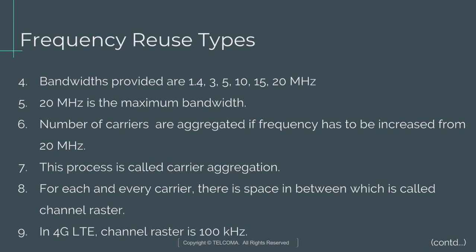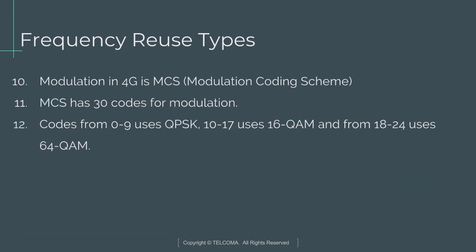In 4G, the bandwidths provided are 1.4, 3, 5, 10, 15, or 20 MHz, so 20 MHz is the maximum bandwidth. If the frequency has to be increased beyond 20 MHz, a number of carriers are aggregated — this process is called carrier aggregation. For each carrier there is a space in between called the channel raster, which in 4G LTE systems is 100 kHz.